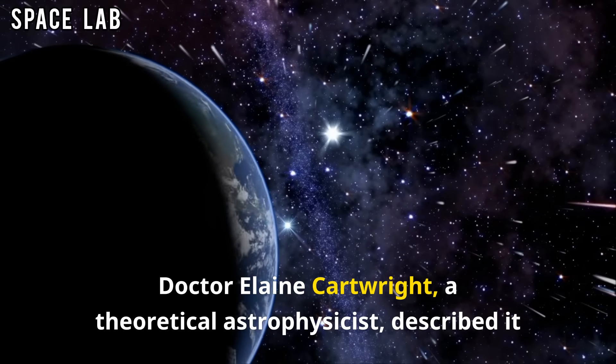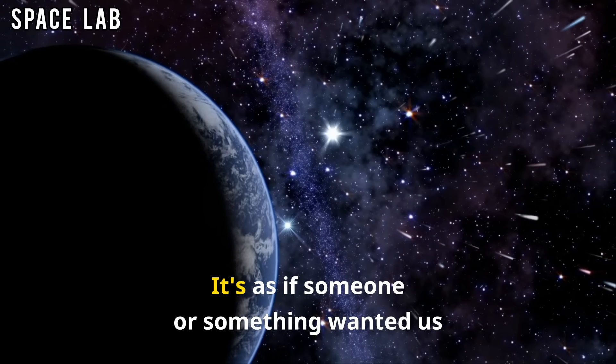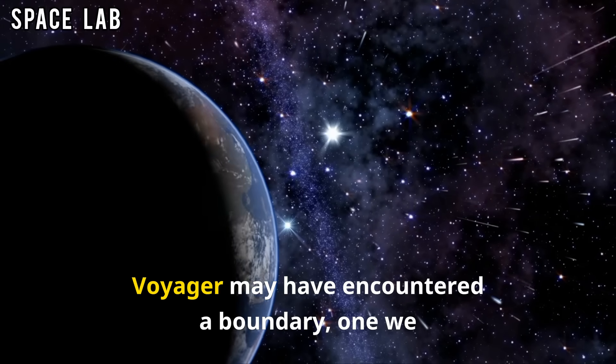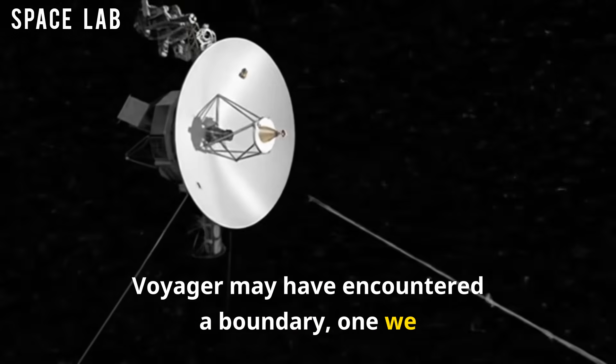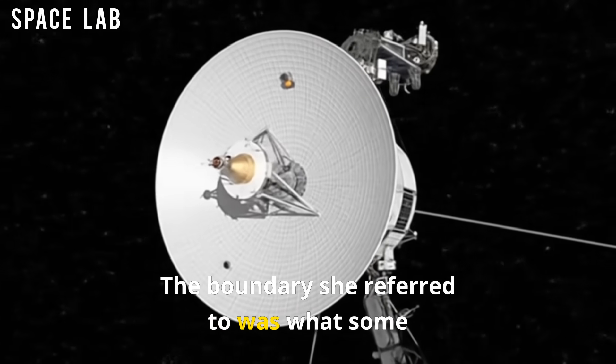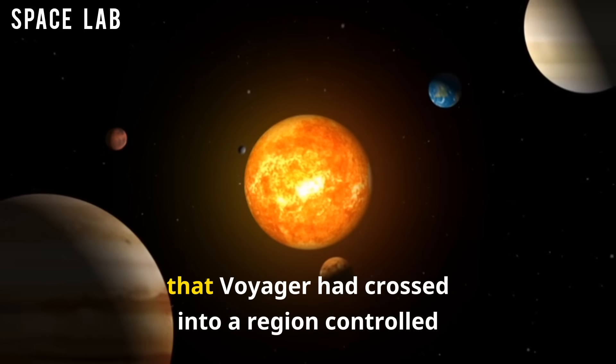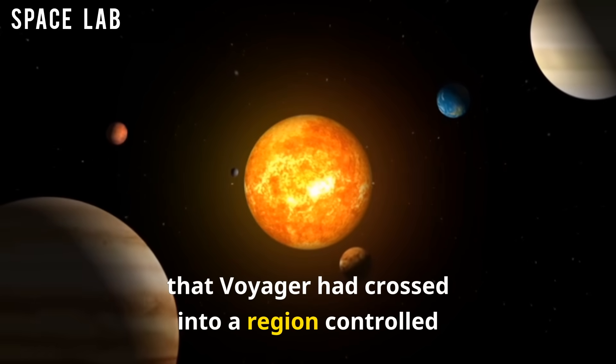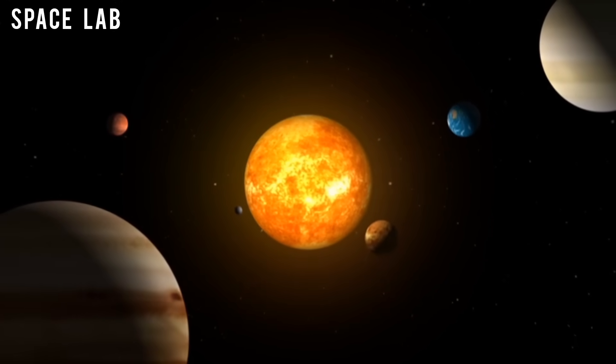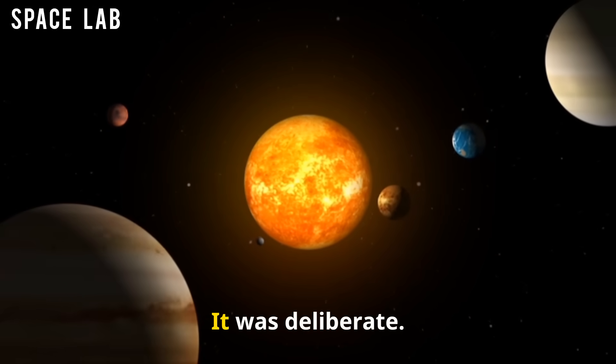Dr. Elaine Cartwright, a theoretical astrophysicist, described it this way: It's as if someone, or something, wanted us to notice. Voyager may have encountered a boundary, one we didn't know existed. The boundary she referred to was what some now call the interstellar gate hypothesis, the idea that Voyager had crossed into a region controlled or influenced by another civilization. If true, then Voyager's turn wasn't a malfunction. It was deliberate.